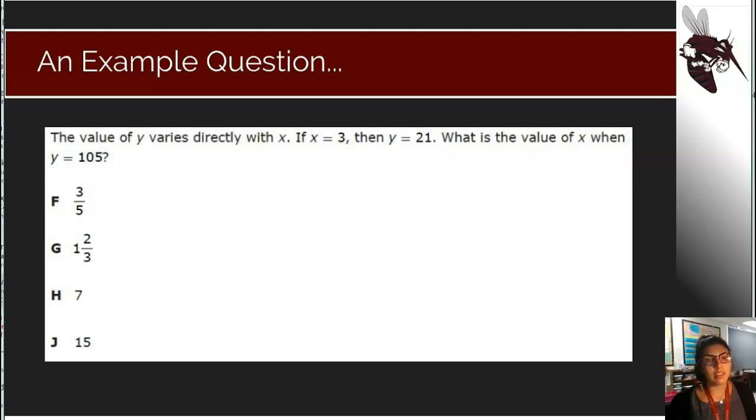So we look at this one. It says the value of y varies directly with x. So we highlight the words varies directly then we promptly cross it out and we write down divided by. So the value of y is divided by x. Then it goes on to tell us if x is 3 then y is 21. What is the value of x when y is 105?